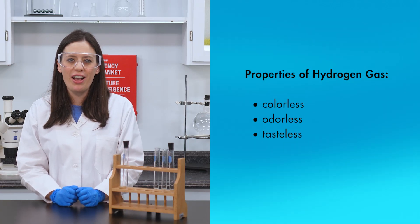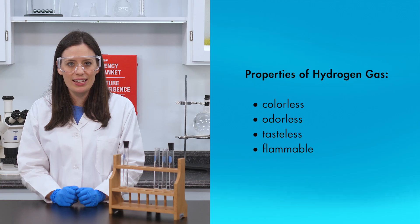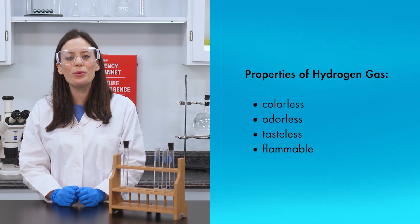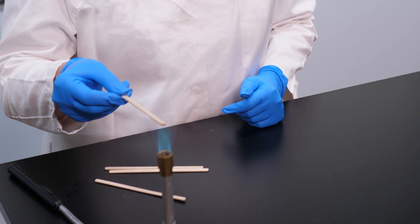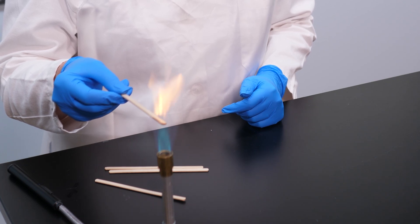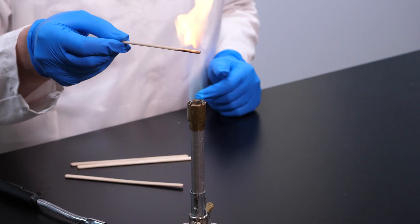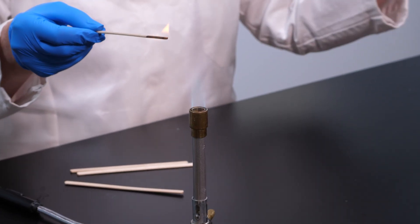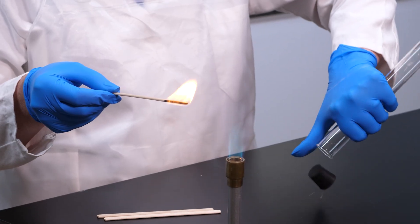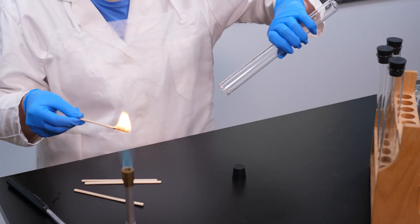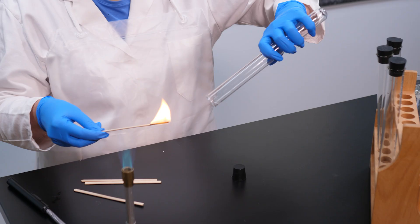One chemical property of hydrogen gas is its flammability. Hydrogen gas is extremely flammable when it mixes with oxygen. We can test the flammability of hydrogen with a burning wood splint. Since hydrogen is lighter than air, the gas will stay in the test tube as long as we keep the tube inverted. The hydrogen gas near the mouth of the tube mixes with oxygen and is ignited by the burning wood splint.